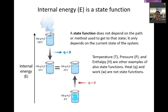Now, this brings us to an idea of what's called a state function. So a state function is a property that depends not on the path or method used to get to a specific state, but it only depends upon the current state of the system.